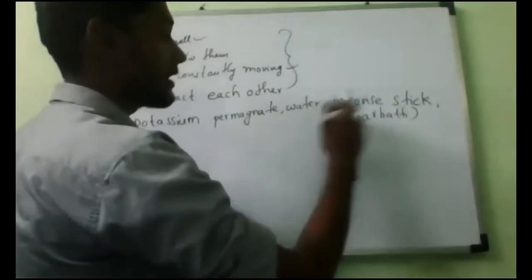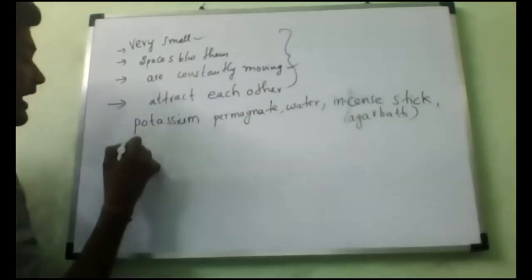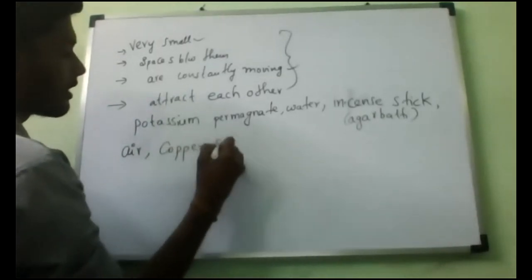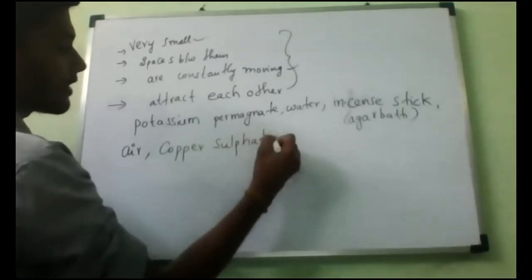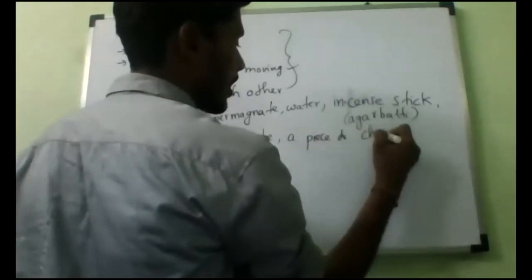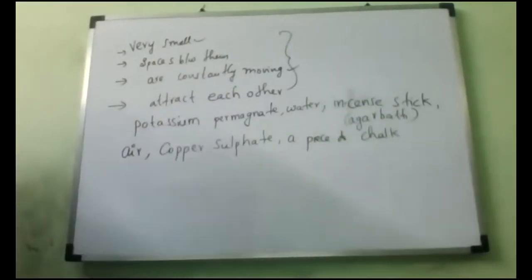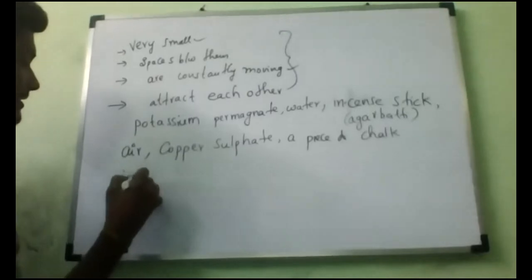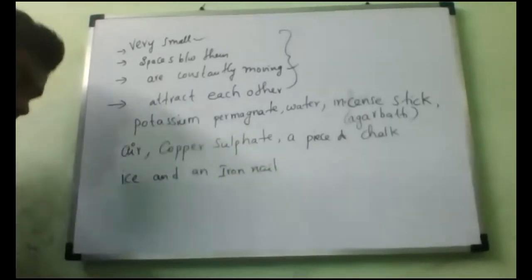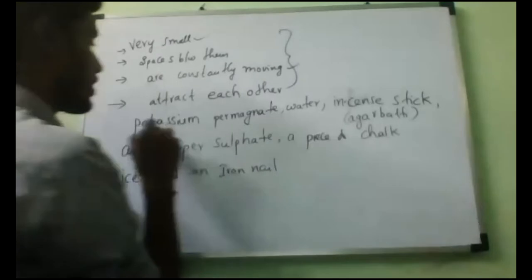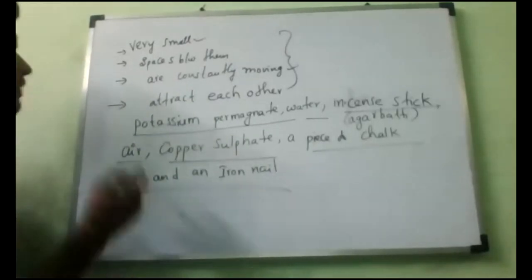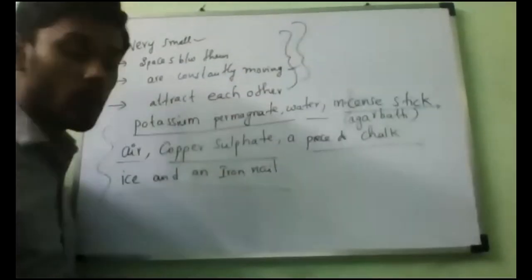The requirements are: potassium permanganate, water, incense stick, air, copper sulfate, a piece of chalk, ice, and an iron nail. These are the requirements to prove the four characteristics of matter. Now shall we start?